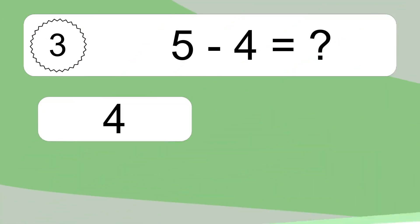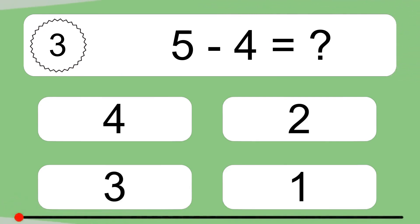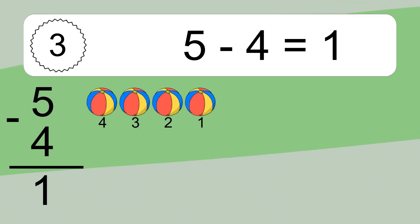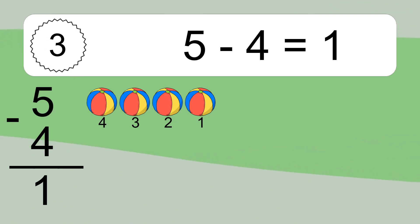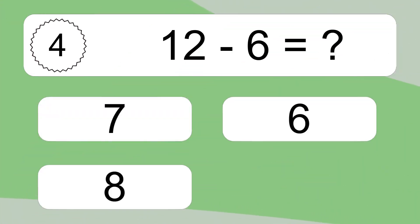5 minus 4 equals what? 5 minus 4 equals 1. Let's count it: 4, 3, 2, 1.